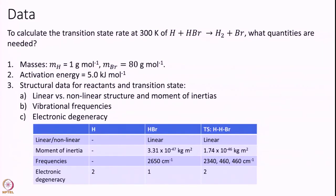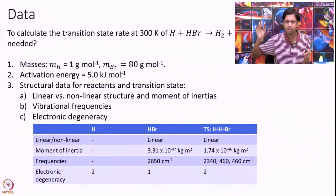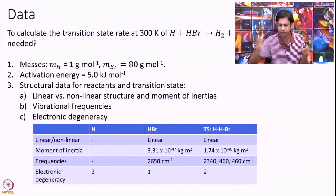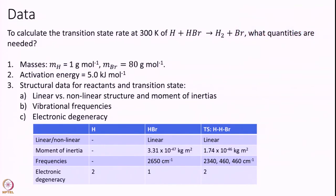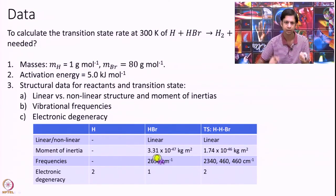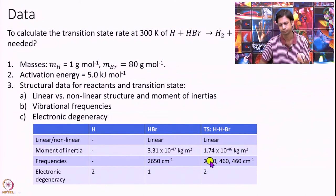Here is the table where all the information is provided. I gathered all the data by experiment or otherwise. HBr is by definition linear and we have assumed the transition state to be linear. I've provided the moment of inertia for both — one moment of inertia each since they are both linear. One frequency for HBr and three frequencies for the transition state. H has electronic degeneracy of 2, because H can be in the positive or negative spin direction (alpha or beta). HBr has degeneracy of 1, and the transition state is a radical with electronic degeneracy of 2.